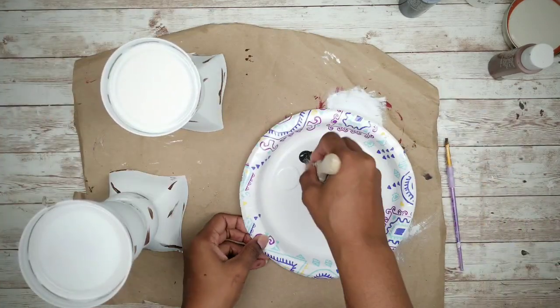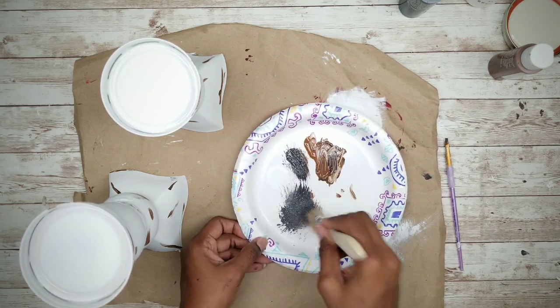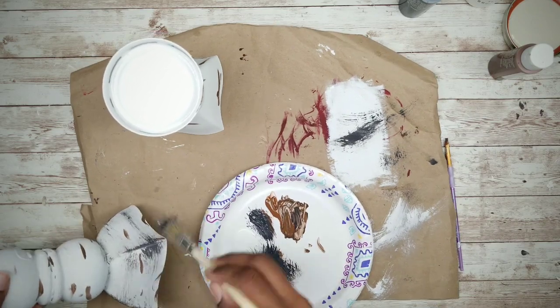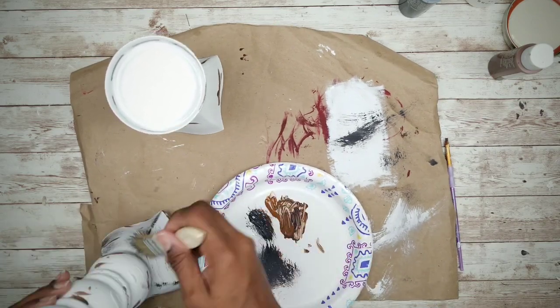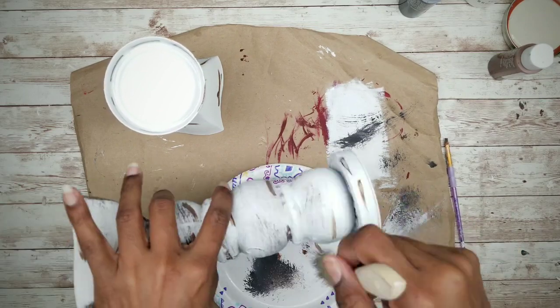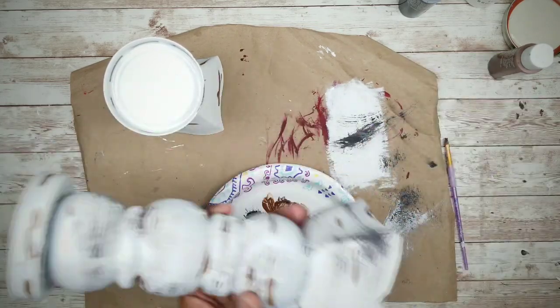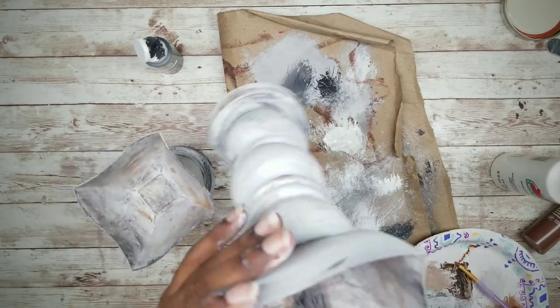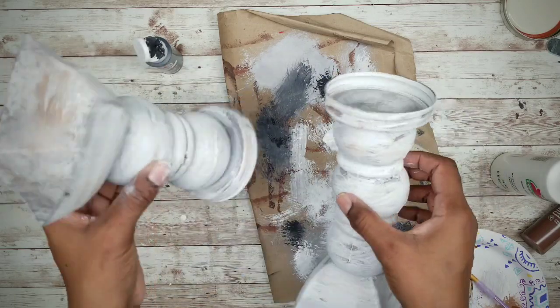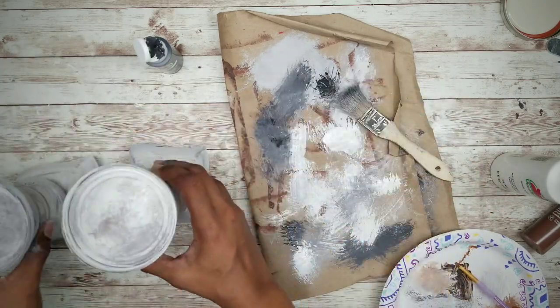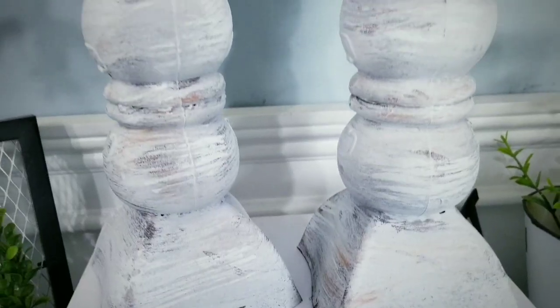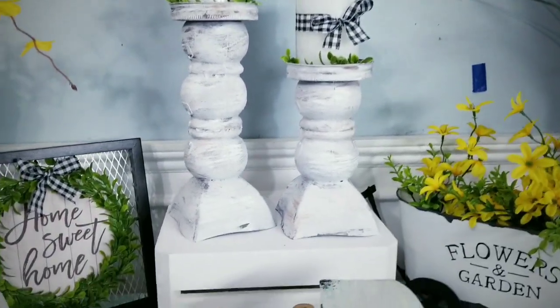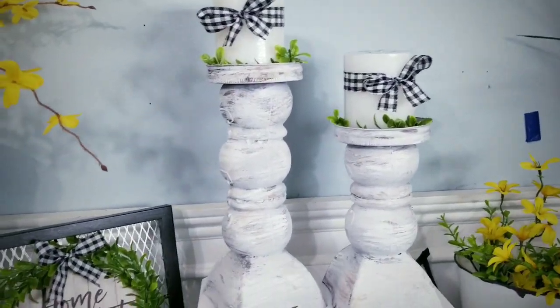And then I'm going to blend that gray and that white, tap off that excess, and dry brush that color onto the candle holder. Then you want to continue to mix and blend all three colors until you get your desired look, and then let them completely dry. And here are my finished candle holders. I really love how these turned out. You just add your candle, some greenery on top, and this completes the candle holder look.